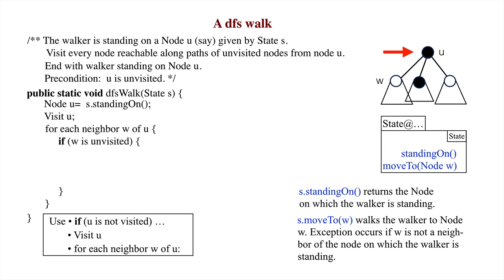According to the spec of DFS walk, the walker must be standing on the node. So the first step is to move to node w. Now, DFS walk can be called using s as the argument. When that call terminates, according to the method spec, the walker will be standing on that same node w.